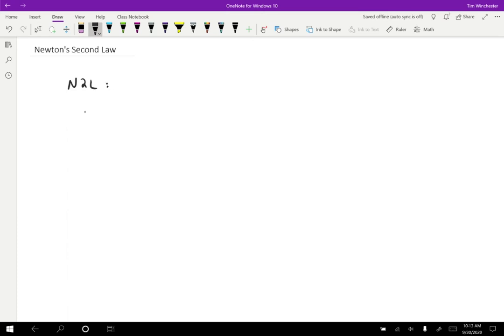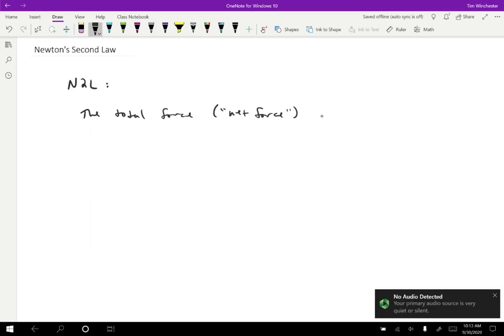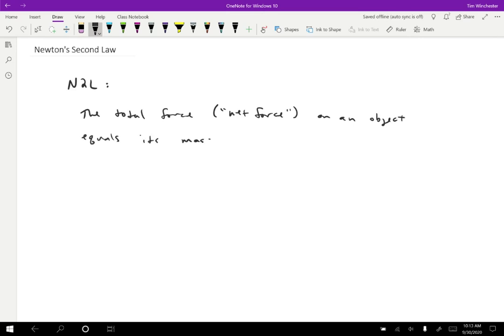So what Newton's second law says is that the total force, which we call the net force, on an object equals its mass times its acceleration. So to write that out, we can do F net equals mass times acceleration, or a way that we commonly write this is we use sigma, the mathematical symbol for summing. So net force as sigma F equals mass times acceleration.